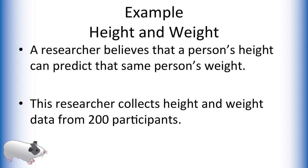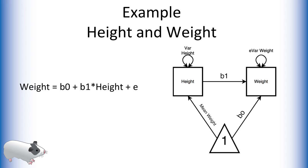Let's walk through an example of when someone might be inclined to use structural equation modeling. Let's assume that a researcher believes that a person's height can predict that same person's weight. This researcher collects height and weight data from 200 participants. This data can be modeled as a standard linear regression, which we see on the left. On the right is the equivalent SEM represented as a path model. Notice how well the path diagram on the right represents the researcher's initial hypothesis that height is influencing weight.